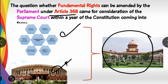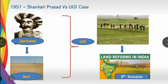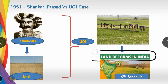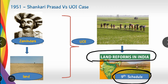Every five years a government changes, raising concerns that fundamental rights could be recreated by each new government. The first government came to power in 1950, and a key case arose involving land reforms. This led to the First Amendment to the Constitution, which introduced the 9th Schedule. The landmark case was Shankari Prasad vs. Union of India in 1951.